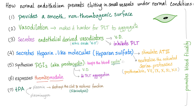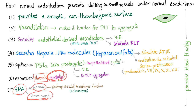The endothelium expresses thrombomodulin, which modulates thrombin. Thrombin is pro-thrombosis, but after being modulated it becomes anti-thrombosis. It also secretes tissue plasminogen activator (tPA), which converts plasminogen into the active plasmin. This destroys the clot and restores function — this is fibrinolysis. This endothelium is just amazing.